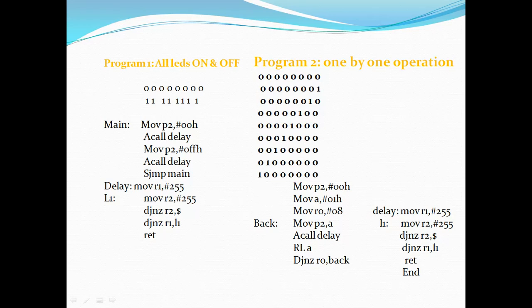After the delay, I assign FFH to the port, giving all ones to the IO pins, and again stay for some time with the delay subroutine, followed by a JMP MAIN for an infinite loop. This process runs continuously — all LEDs on, all LEDs off.